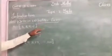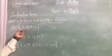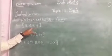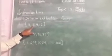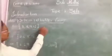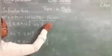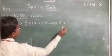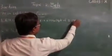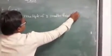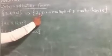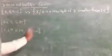Now writing a set builder form — they give some sets in roster form and we find the common property. For the set {3, 6, 9, 12}: they are multiples of 3. So in set builder form we write: the set of x such that x is a multiple of 3 and x is less than 13.